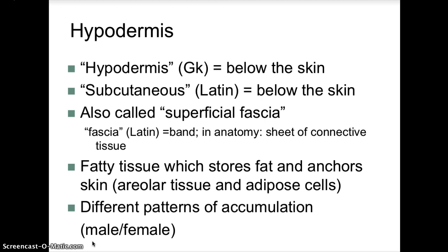Our next layer is the hypodermis. The hypodermis is basically below the skin — 'hypo' meaning below, 'dermis' meaning skin — so it's subcutaneous, meaning below the skin. It is also called the superficial fascia, and fascia is Latin for a band. In anatomy, it's a sheet of connective tissue.